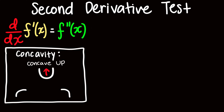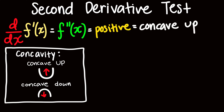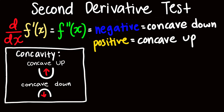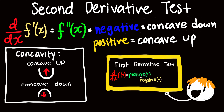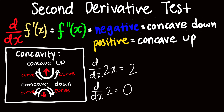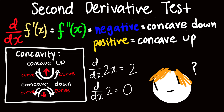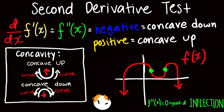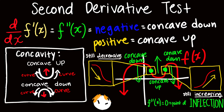Essentially, concave up is when an original function's curve is facing upwards, and concave down is when a graph's curve is facing downwards. So when the second derivative is positive, it is concave up, and when the second derivative is negative, it is concave down. It's important to note that concavity is purely based on curves — this is why the second derivative of linear functions is just zero. But this doesn't necessarily mean concavity doesn't exist when the second derivative is zero. If the second derivative is zero, it would be called a point of inflection, which is the point at which the concavity changes, not when the function changes from increasing to decreasing.